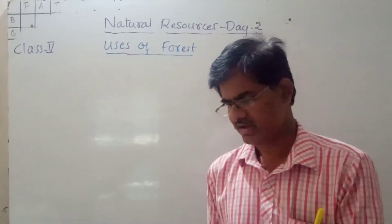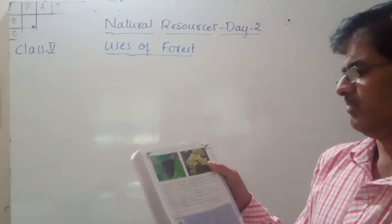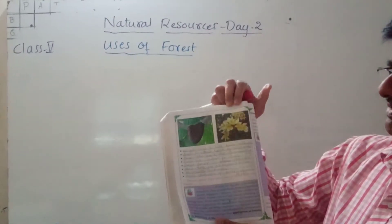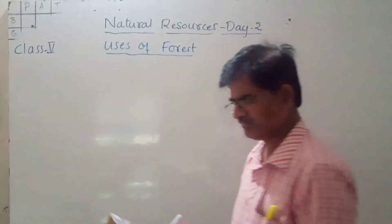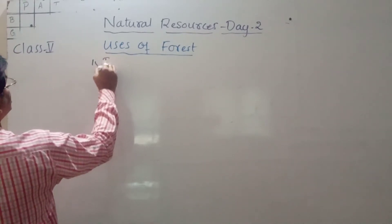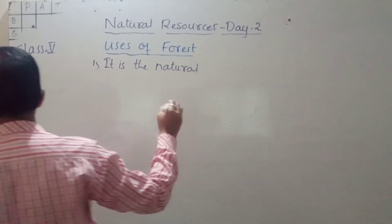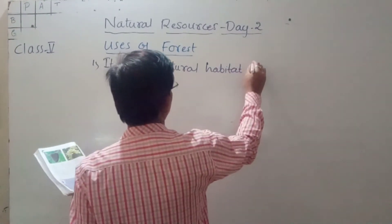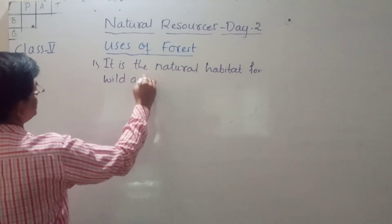Now let us see the uses of the forest formally. First point: forest is the natural habitat for wild animals and birds. Second point: forest is the shelter not only for animals but also for tribal peoples living in the forest.